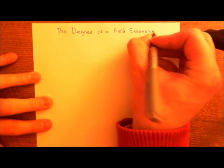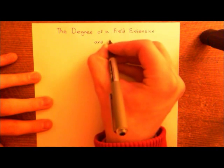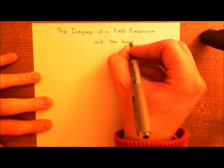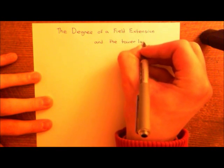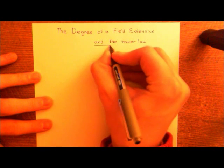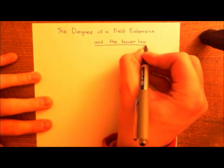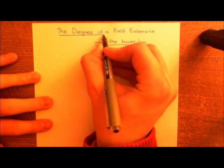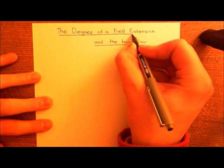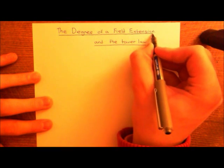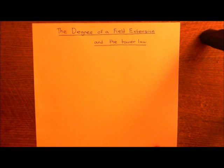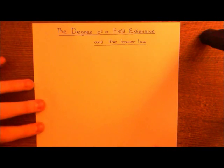So the degree of a field extension, and then we'll move on to the tower law and we'll prove the tower law. We'll start off by defining what the degree of a field extension is. This is a very simple concept, but it's remarkable how powerful this concept is going to be. This is going to help us get a handle on field extensions.